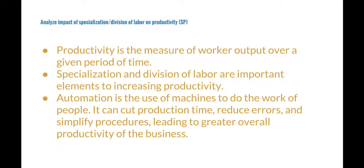An assembly line is an example of specialization and division of labor. Automation is the use of machines to do the work of people. Automation can cut production time, reduce errors, and simplify procedures, leading to greater overall productivity of the business.